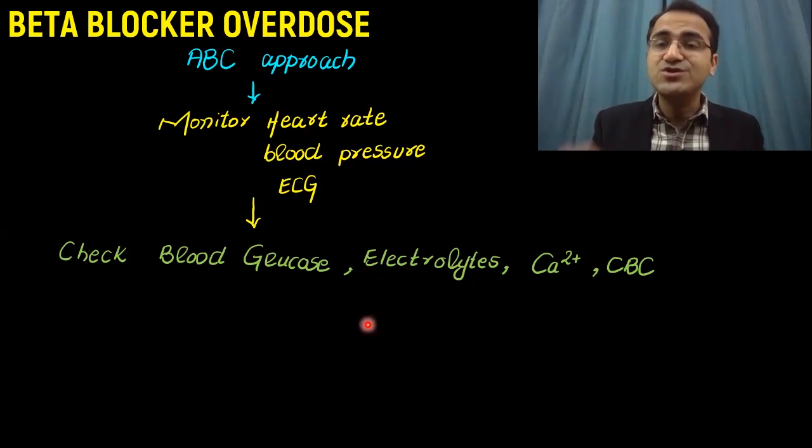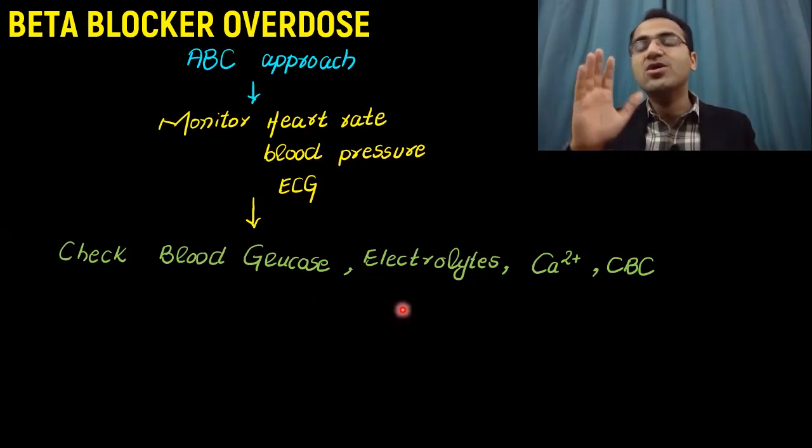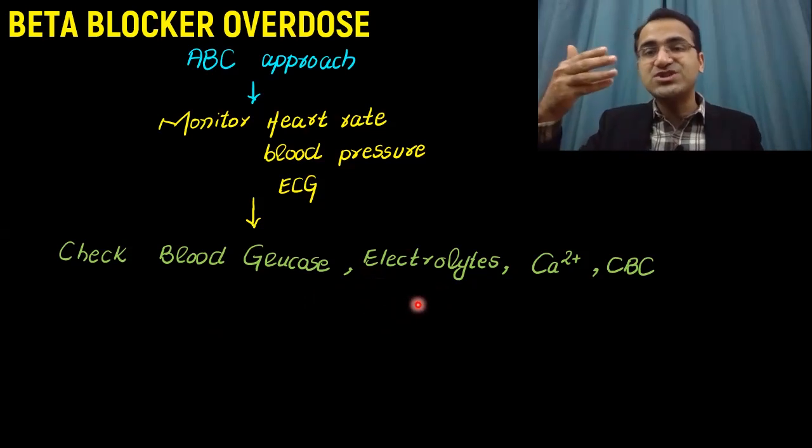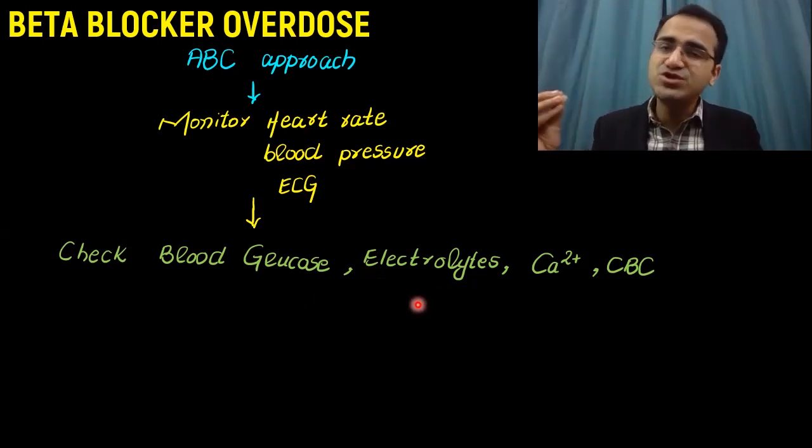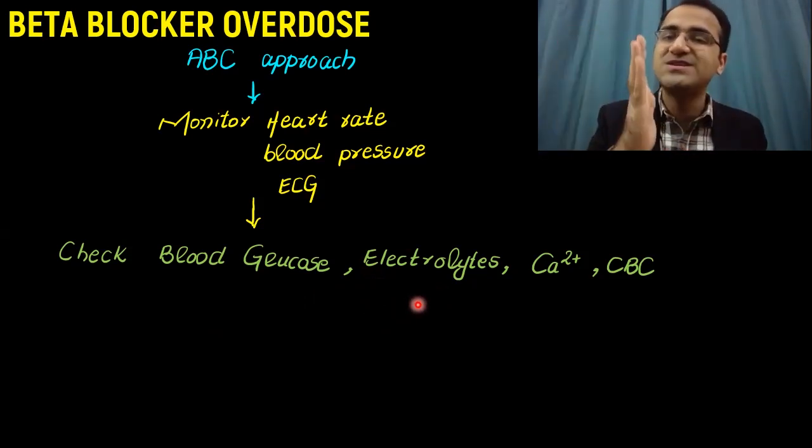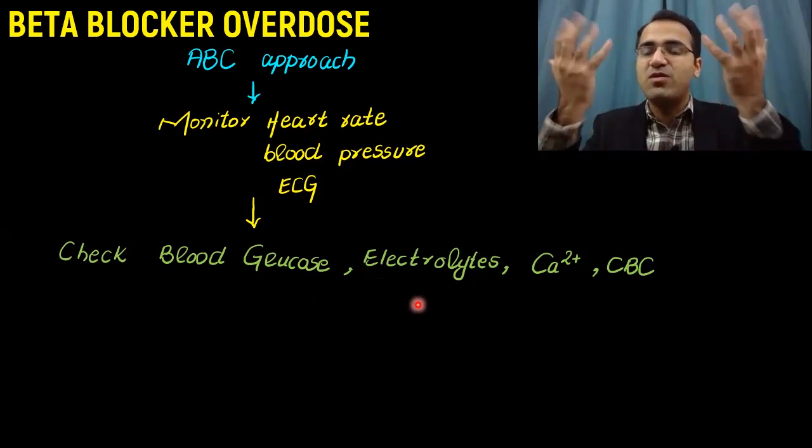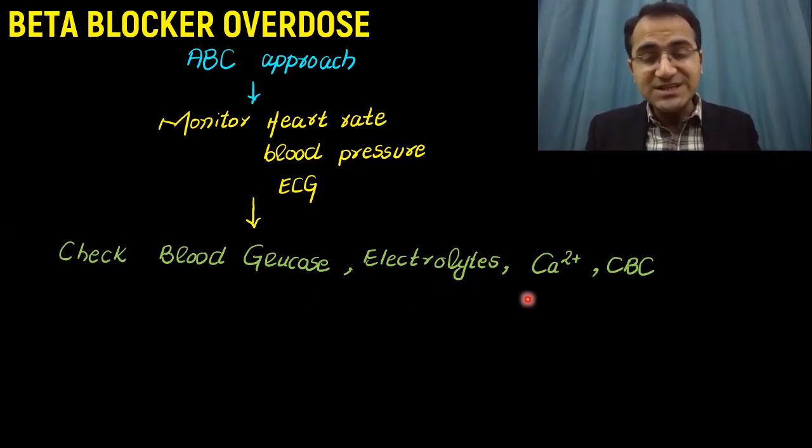You check electrolytes - beta blockers cause hyperkalemia because beta agonist action, the sympathetic nervous system, pushes potassium into the cells. When you block the sympathetic nervous system, there will be buildup of potassium in the blood. You check the blood calcium and you do CBC.